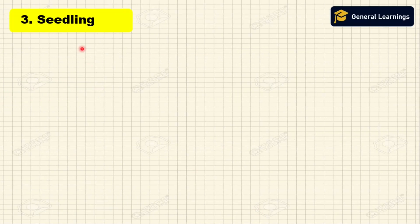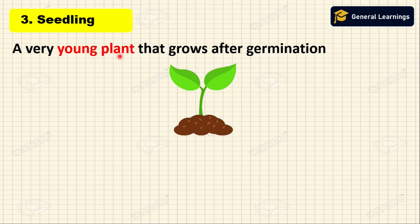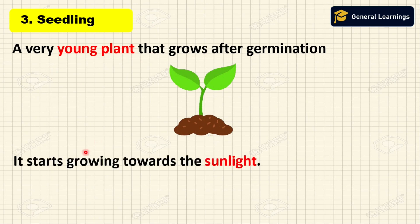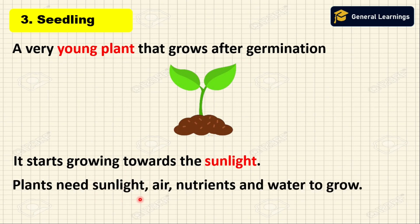The next stage is seedling. When a young plant grows after germination, it starts growing towards the sunlight. Plants need sunlight, air, nutrition, and water to grow.